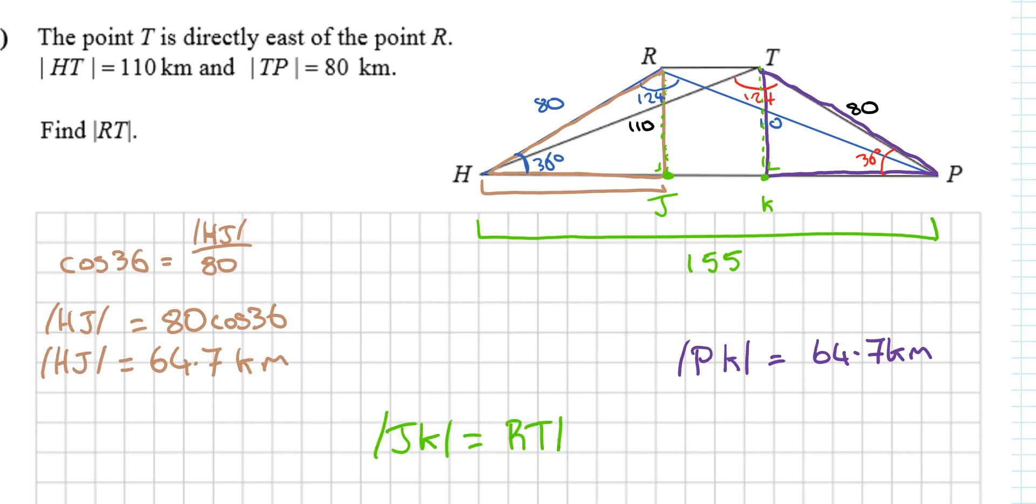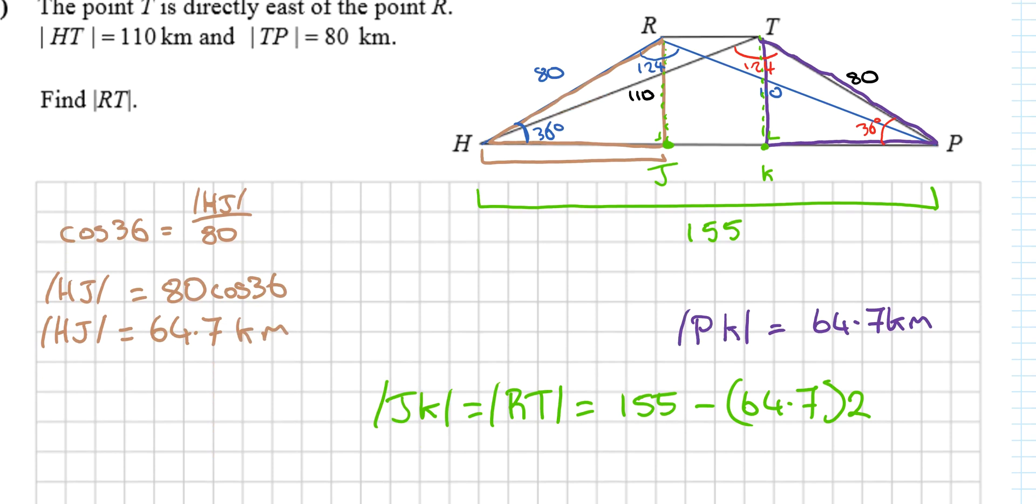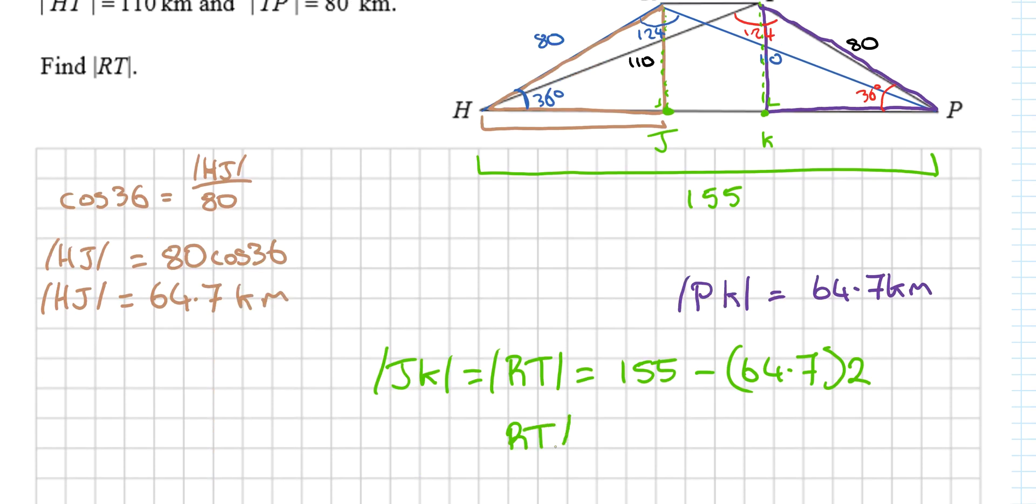RT = 155 - 2 × 64.7 = 25.6 kilometers, and that's it done.